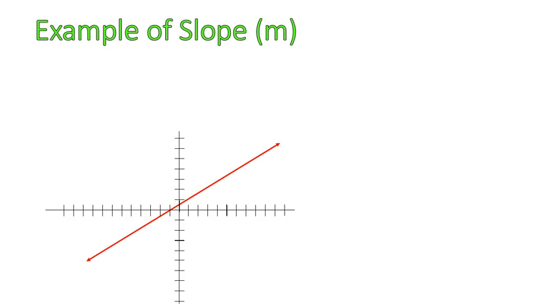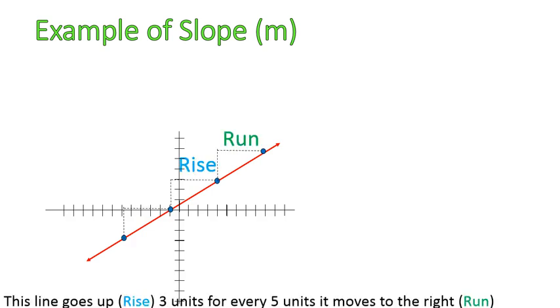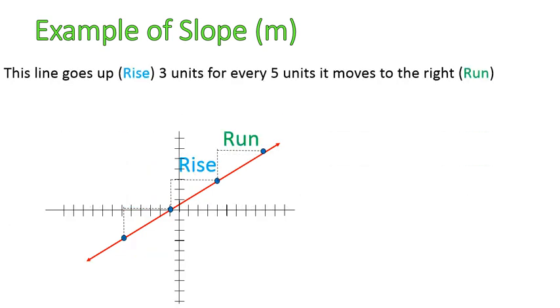So here's an example of slope. I just want to show you that with this one, the line goes up the rise of three units for every five units it moves to the right.